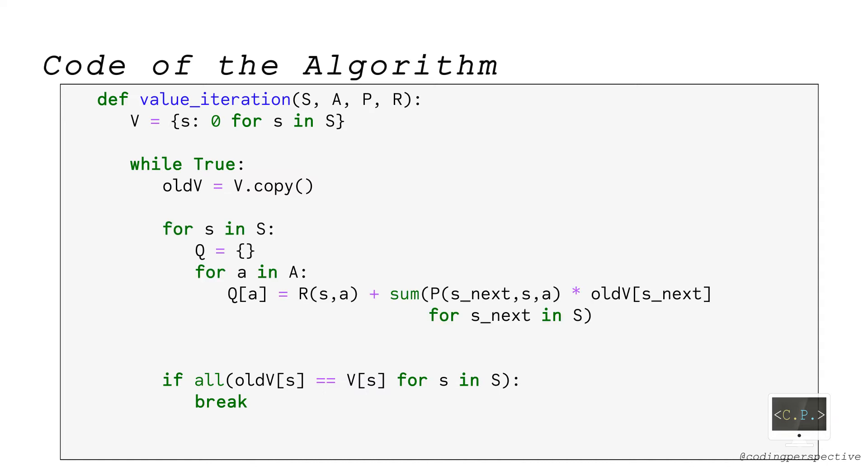To update the value function V(S) for state S at any iteration, we first calculate Q for each action A as you see. One important point here is that we use oldV instead of V while computing the expected future reward in this sum because we update V while iterating state S. Then, we can calculate and update V(S) by finding the maximum value of Q over A. Once we attain the convergence, we return the value functions as an output.